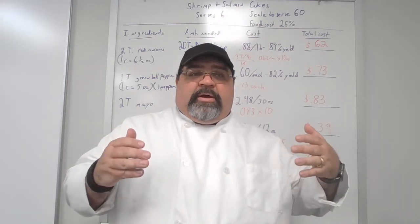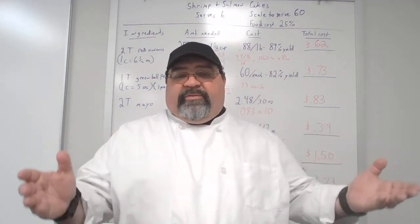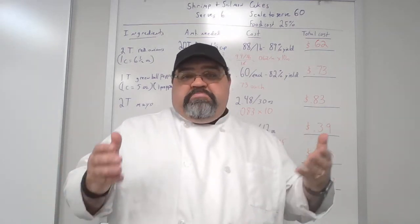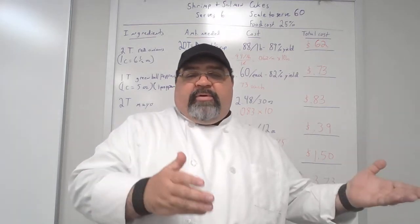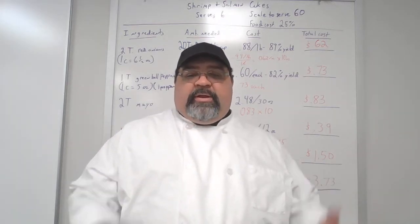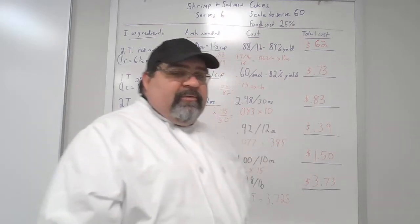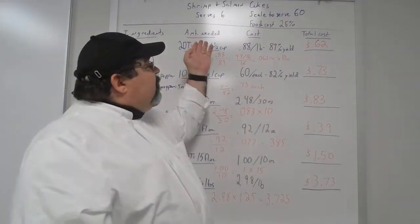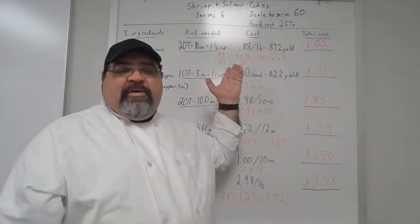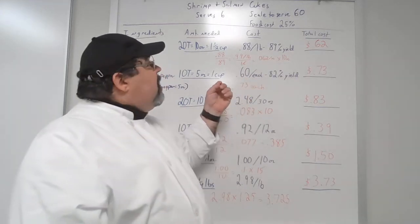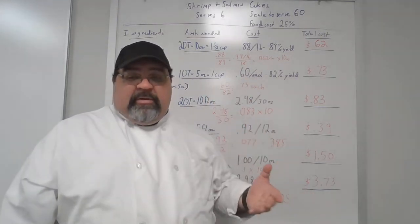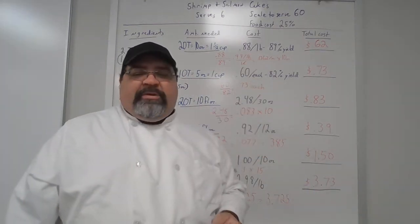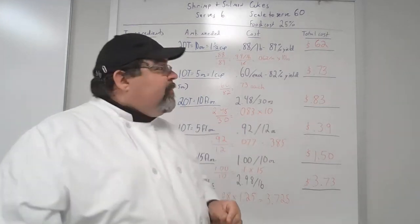If you're going to make a recipe and you need to make more than what the recipe calls for, we're going to do that and figure out how much it will cost to make the final recipe. We have shrimp and salmon cakes. The recipe serves six people, and we're going to make it to serve 60 — simply multiplying by 10. We're going to have a food cost of 25%. Remember that — it'll come in later.